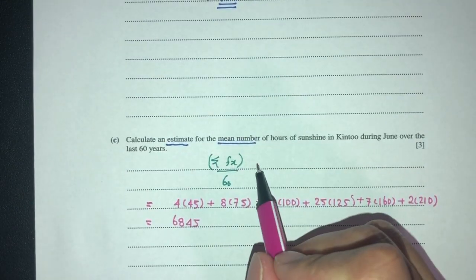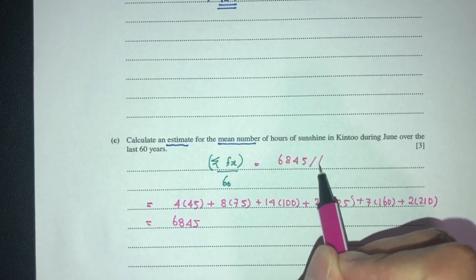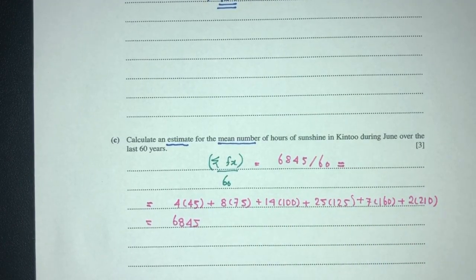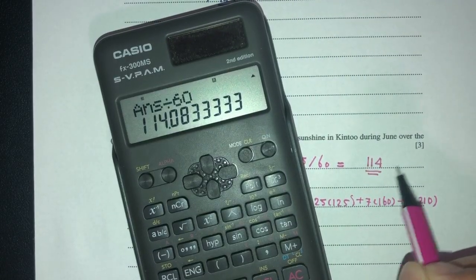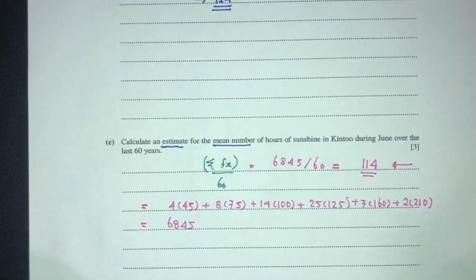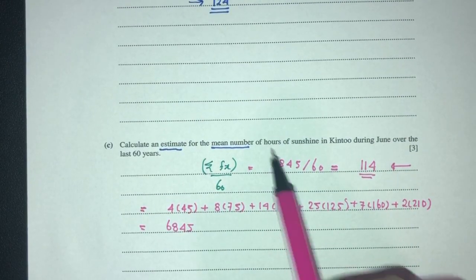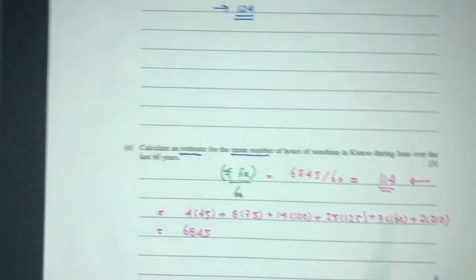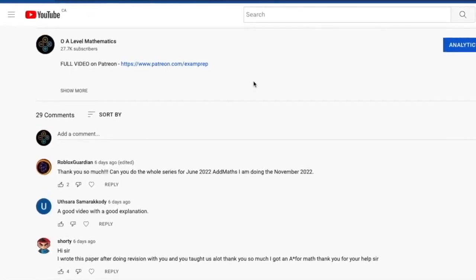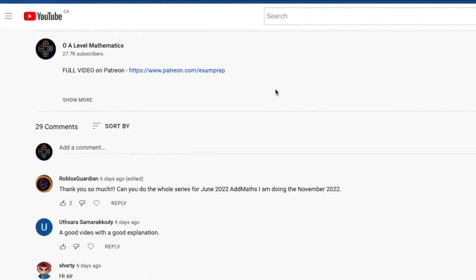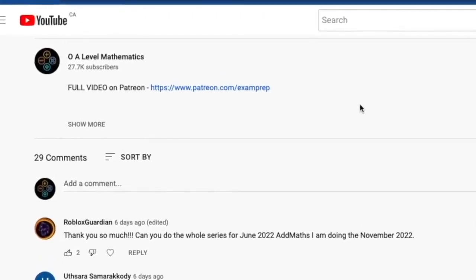Finally, we have to replace. That should be just the value of 6845 on top divided by 60 for your mean value. That will be 114 as your answer correct to 3 significant figures. And this is your 114, which is the mean number of hours. So 114 hours as your answer for part C of question number 1. Leave the description below and click on this link to access the Patreon page for the full video. With that being said, good luck and thank you for watching.